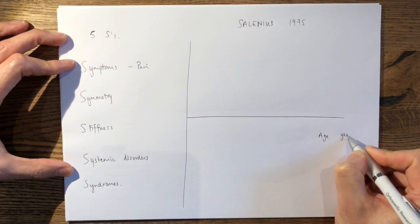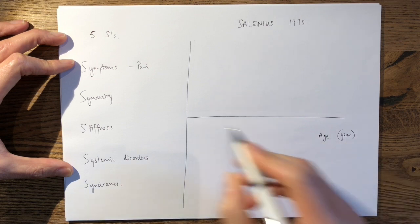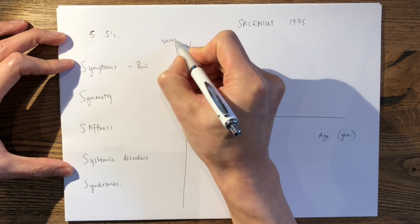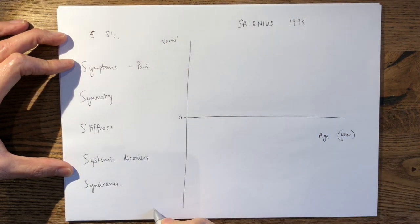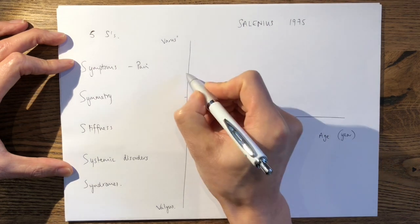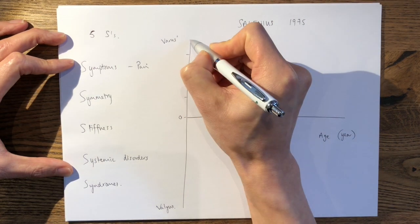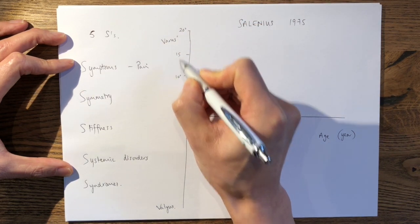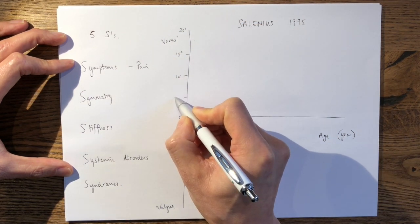And your age is in years and your y-axis, your angle would have your varus angle up here and your valgus angle down here. And the increments you should use are in 5s, so I would go all the way up to 20 degrees of varus up there. And here you can go to 15 degrees of valgus down here.